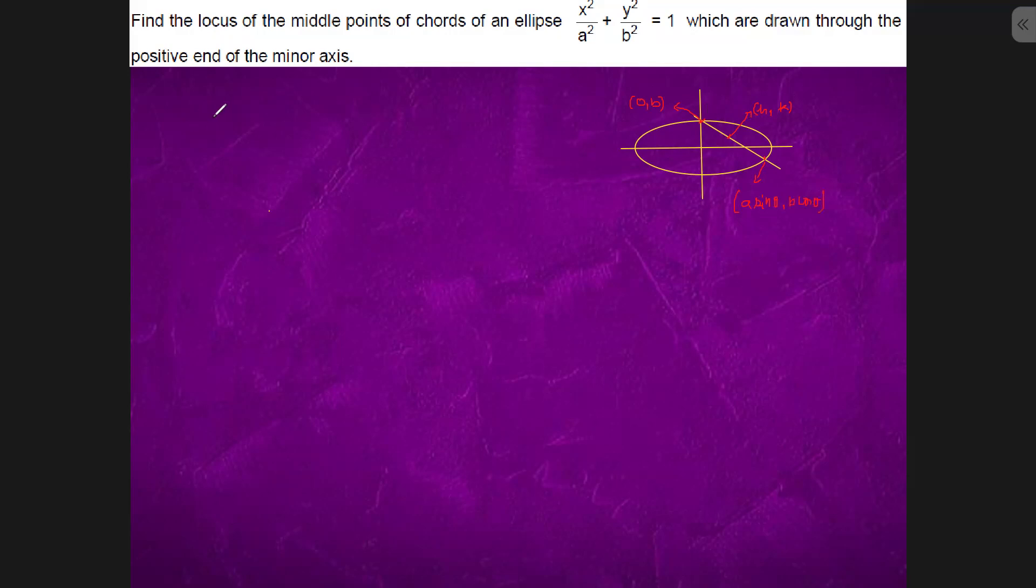So the midpoint h is what? 0 plus a sin theta by 2. k is what? b plus b cos theta by 2.